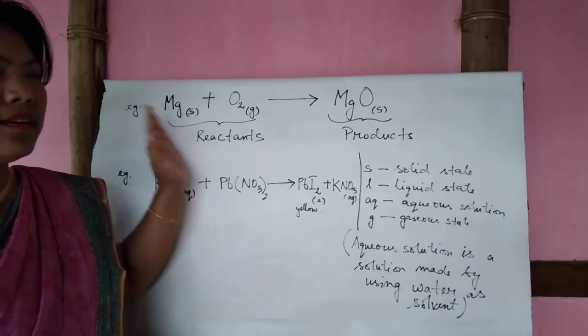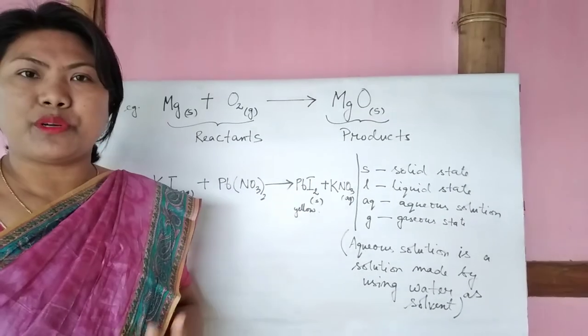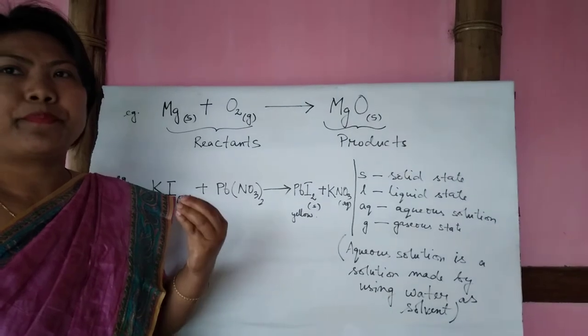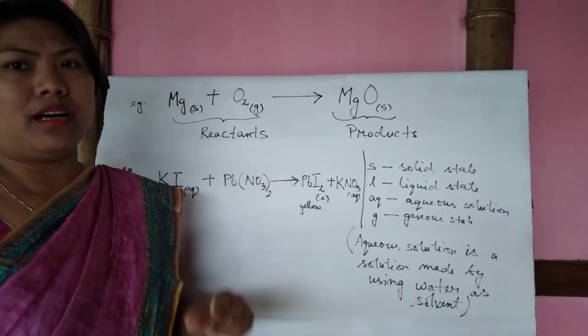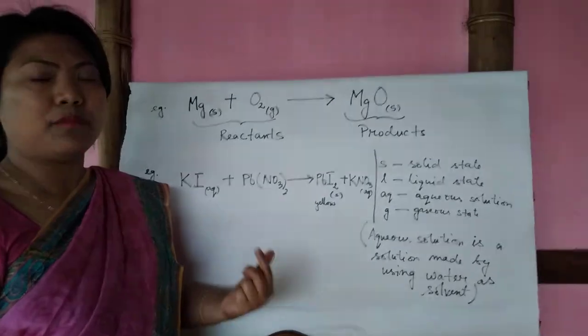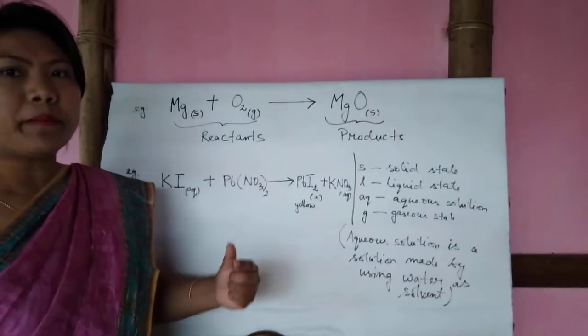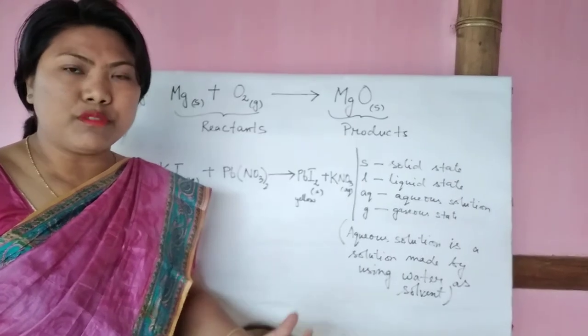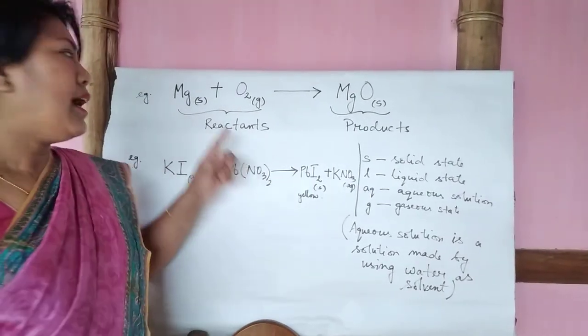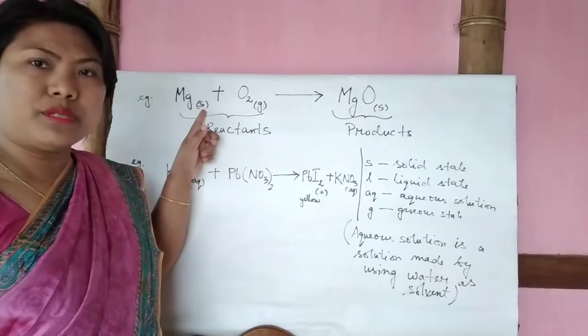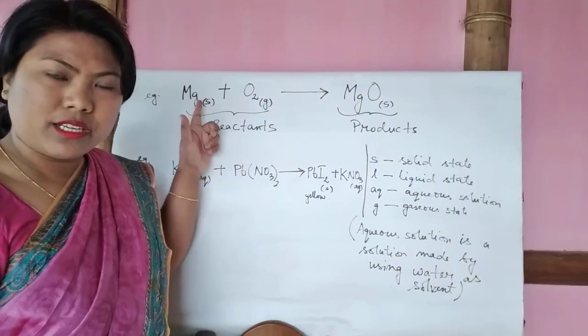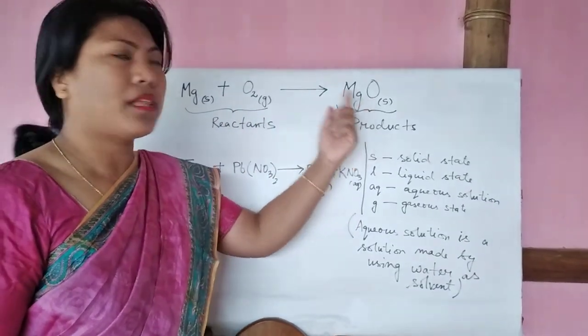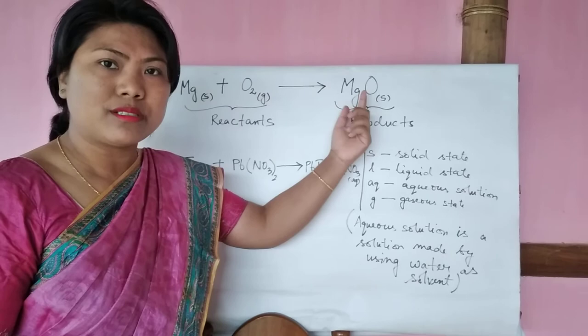Here also, while representing a chemical equation, we have to state, we have to mention the state of the reactants and products involved in the reaction. So to represent the state, that is whether they are in solid, liquid, gas, or in solution form you are taking, we have to represent. And to represent that, we have used this case to represent magnesium is taken in solid state, and then oxygen is in gas state, and then the product newly formed is in the solid state.